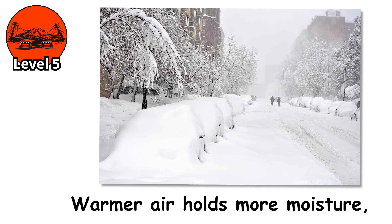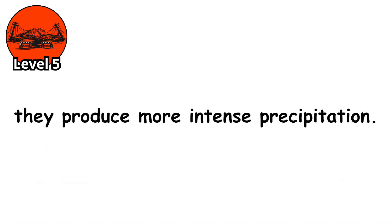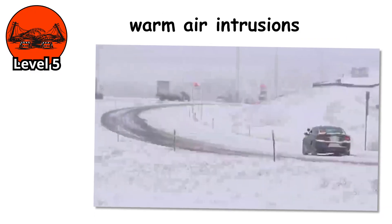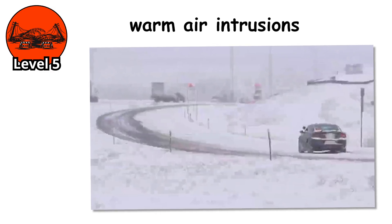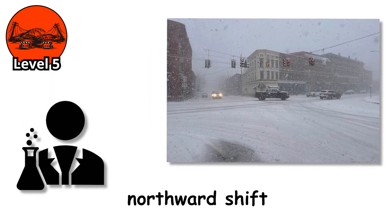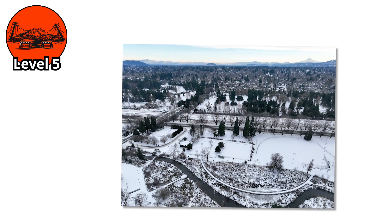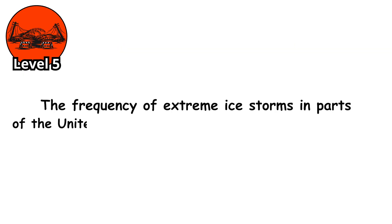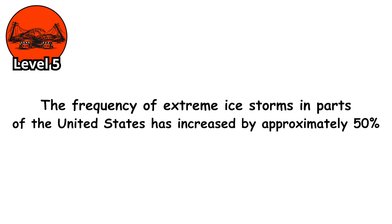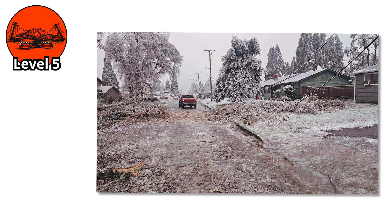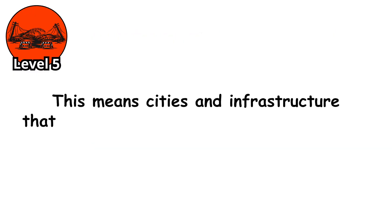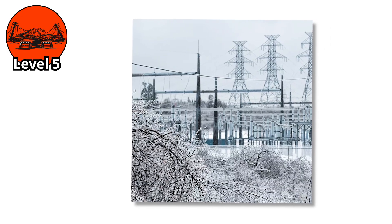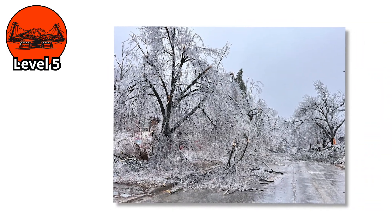Warmer air holds more moisture, meaning when these setups occur, they produce more intense precipitation. Additionally, Arctic warming is causing the jet stream to become more wavy and unstable, creating conditions where warm air intrusions into typically cold regions become more common. Scientists have observed a northward shift in the zone where severe ice storms occur most frequently. Areas that historically saw rare ice accumulation are now seeing it more regularly. The frequency of extreme ice storms in parts of the United States has increased by approximately 50% over the past several decades, according to research from the American Meteorological Society. Power grids designed for moderate ice loads are encountering extreme ones. Tree species not adapted to ice weight are being devastated.